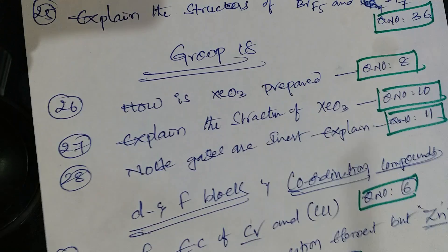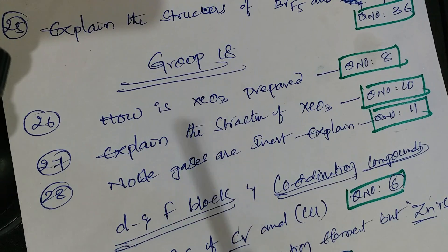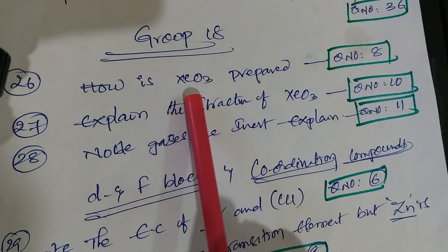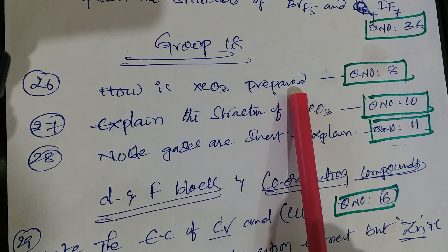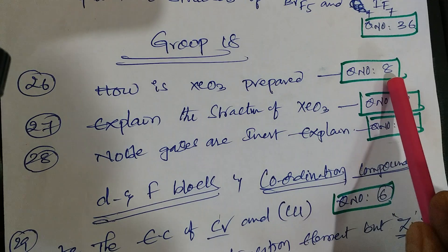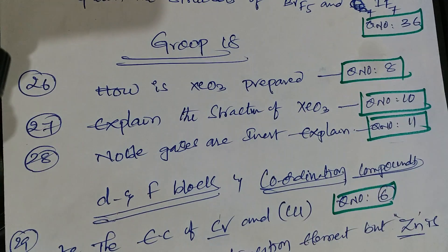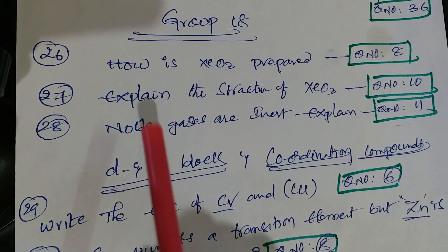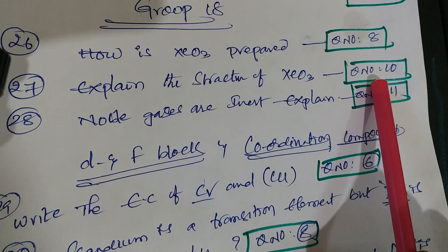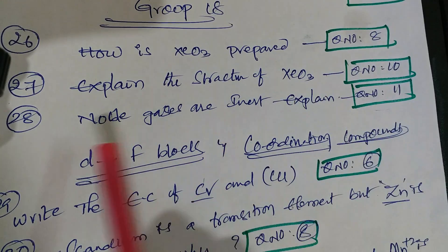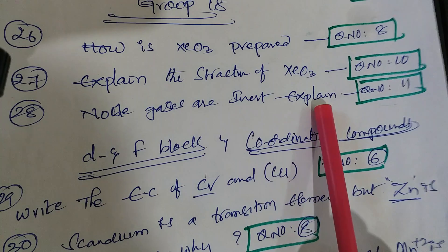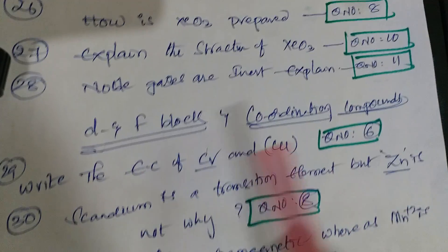Next: 18th group elements. How is XeO₃ prepared - question number 8. Explain the structure of XeO₃ - that is question number 10. Noble gases are inert - explain. That is question number 11.